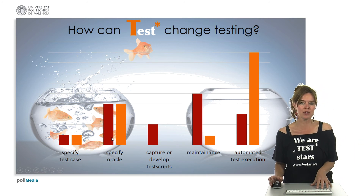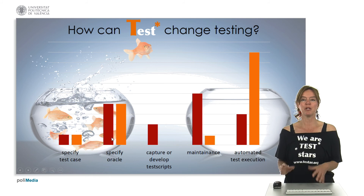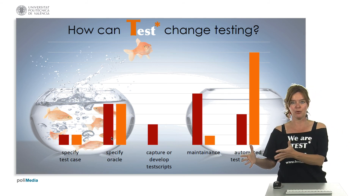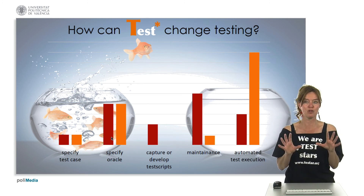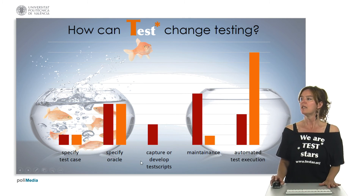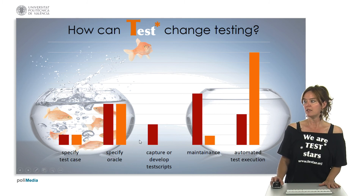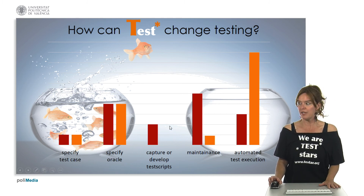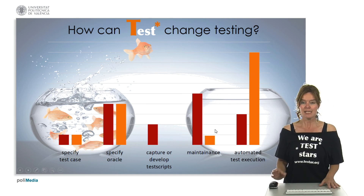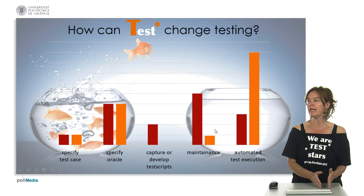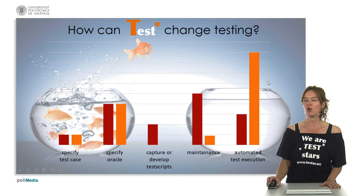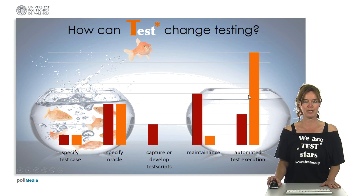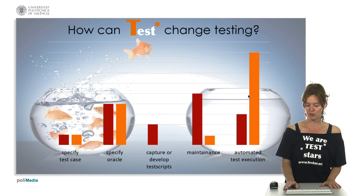Oracle specification is something we always need to do, since beyond implicit oracles we must specify what the system is doing right or wrong for the specific domain. However, in Testar there are no scripts, so we save time there, and we also save time on maintenance since there are no scripts that can break. This means we have a lot more time for test automation — and that is how we see Testar changing the testing process.